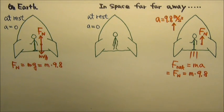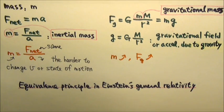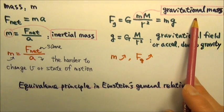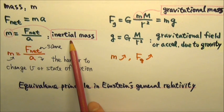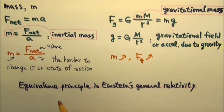That is basically the equivalence principle, which means gravitational mass is equivalent to inertial mass. And so far, no experiments have shown any measurable difference between the two.